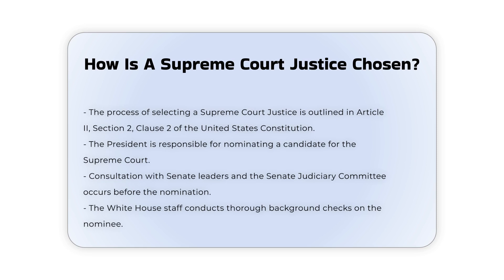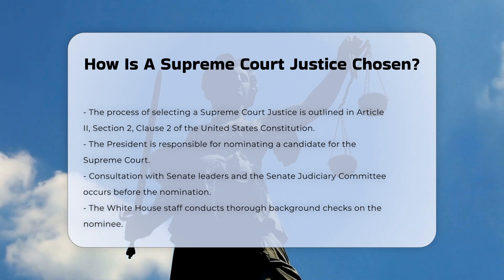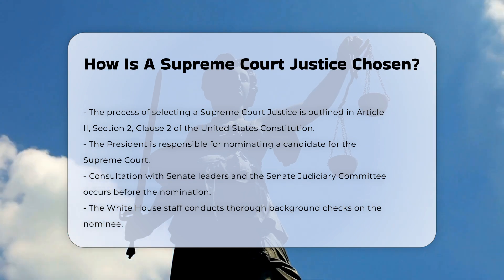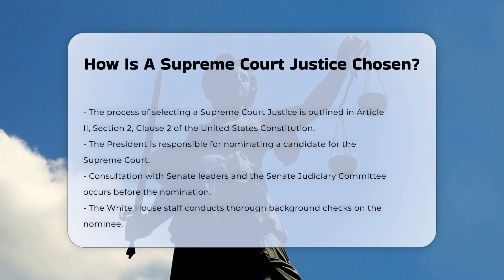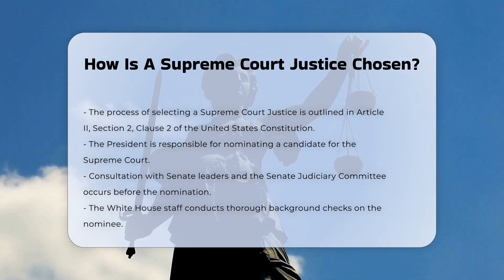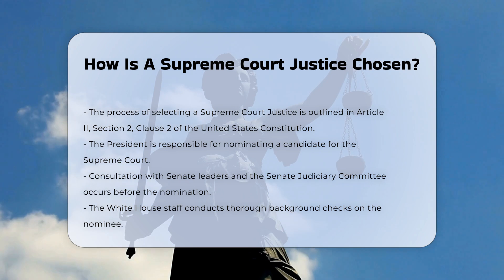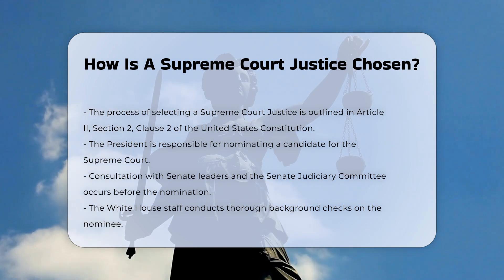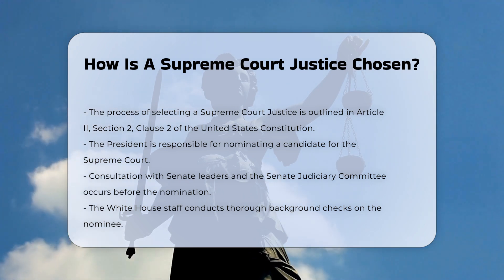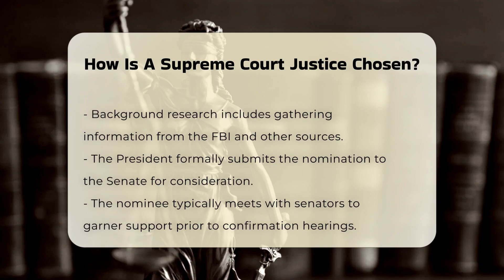Nomination by the President. The process begins with the President identifying a potential candidate for the Supreme Court. This involves consultation with various stakeholders, including Senate leaders and members of the Senate Judiciary Committee, to discuss potential nominees and address any issues that may arise during the confirmation process.